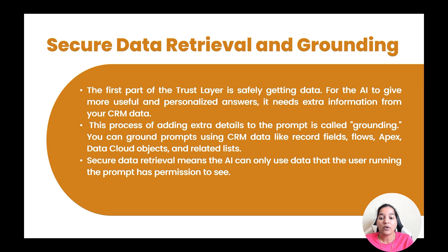So what is grounding? When you are adding additional details to your prompt — basically fetching the data from your CRM, from objects, fields, related lists, and so on — and adding it to your prompt, this process is called grounding. You can ground prompts using CRM data like record fields, flows, Apex, Data Cloud objects, and related lists.